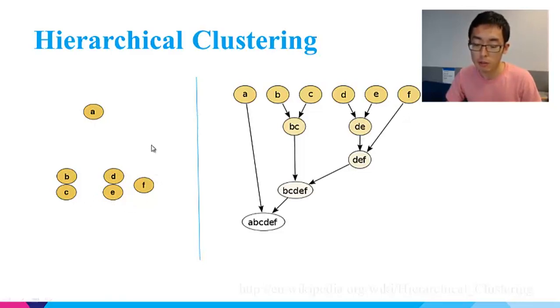Then, we calculate the distance of every two of these five points. We find that point B and point C have the shortest distance. Then we cluster BC together and treat BC as one single data point. Now we are left with four data points: Point A, point BC, point DE, and point F.